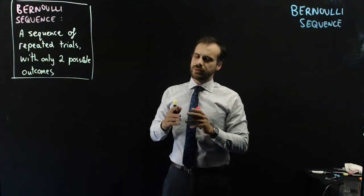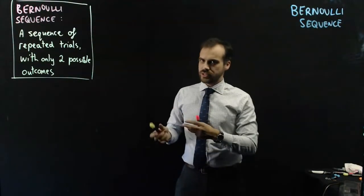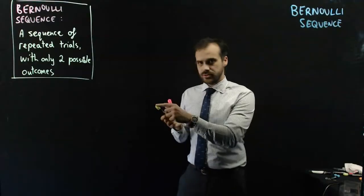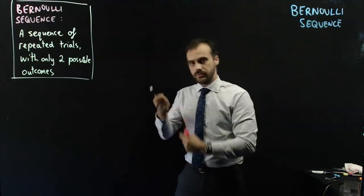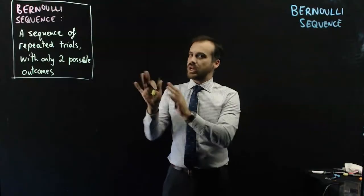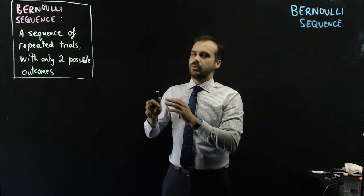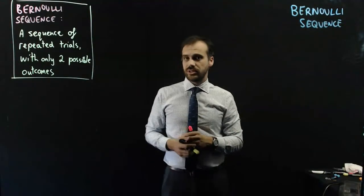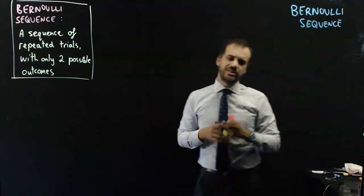Now, that's misleading because there's a 50-50 chance that it's either top up or bottom up. But that does not have to be the case with a Bernoulli sequence. So let's look at a slightly more different example.